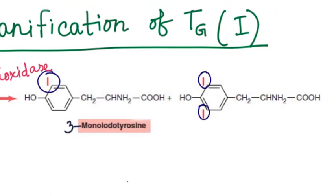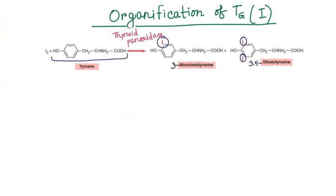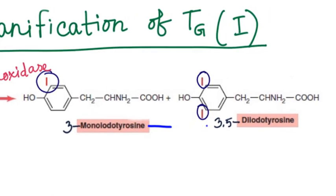If two iodine binds with one tyrosine molecule, diiodotyrosine will be formed. Now, two adjacent iodine will form bond between them with the help of thyroid peroxidase. In other terms, we can say that iodotyrosine residues become coupled with one another.